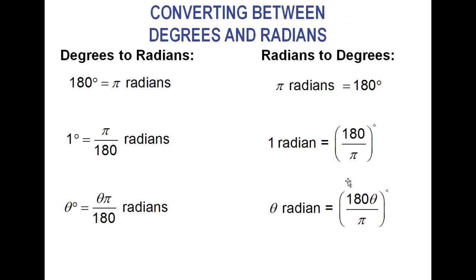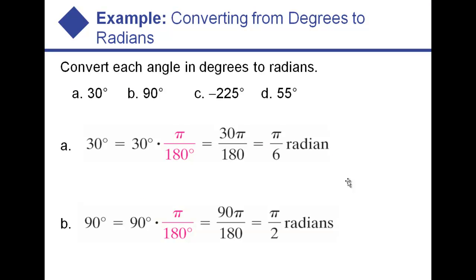So now we can convert. 180 degrees equals pi radians, and we can go back and forth with any conversion. If we want to convert 30 degrees, we multiply 30 degrees times pi over 180, because pi equals 180, so pi over 180 is just 1 — like saying 12 inches over 1 foot. By doing this you cancel degrees, and 30 cancels with 180 to give you pi over 6 radians.